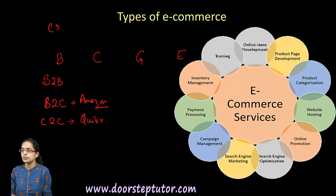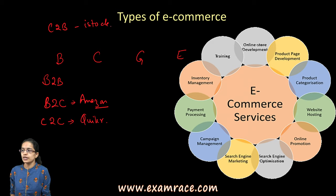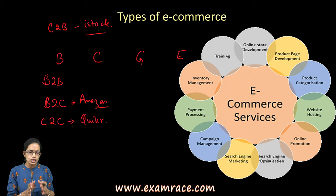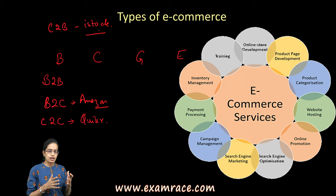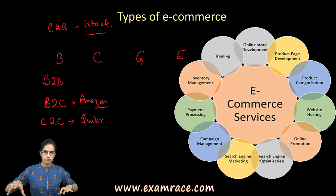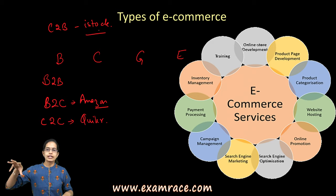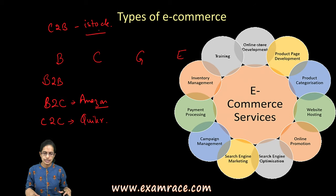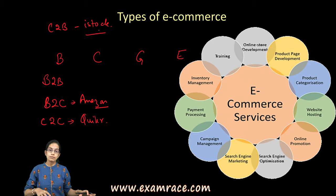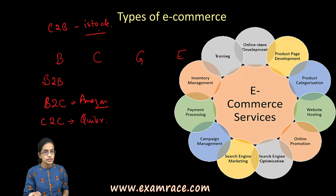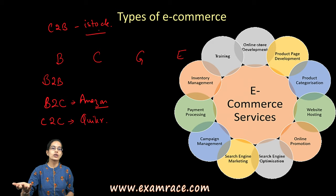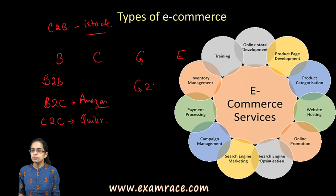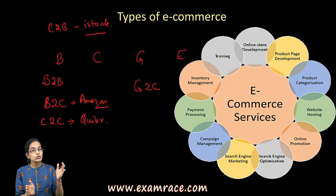C2B is consumer to business — iStock is a good example where services are given from consumer to business. Then there is G2G, government to government, where various government departments are interlinked and facilities are provided from one department to another. G2C is government to consumer — for example, the issuance of a birth certificate, which is provided by government authorities directly to the consumer.